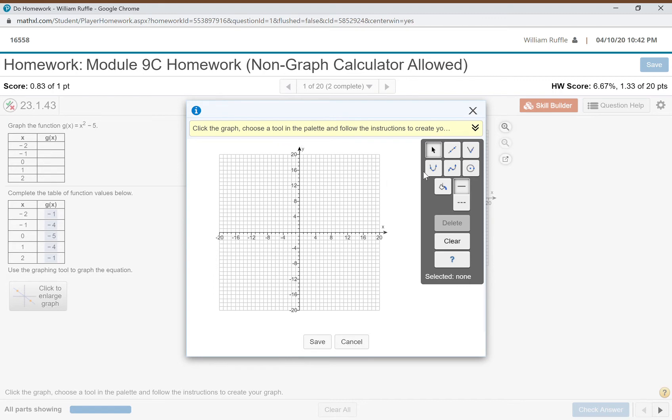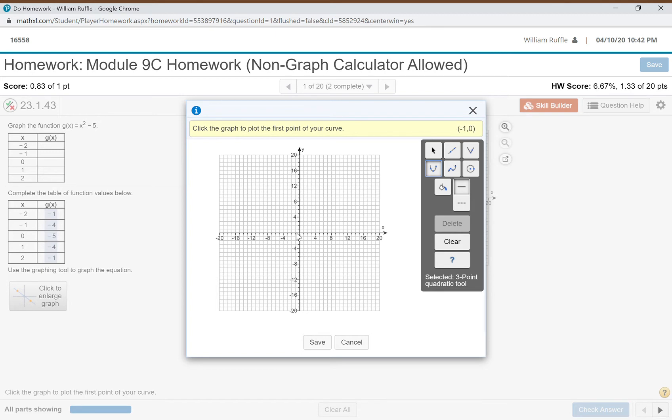When I move my mouse over the parabola, you can see it says three-point quadratic tool. That means I just need to plot three points and I can pick whichever three points I want to do. It doesn't matter what order. I'm going to click on this and do negative two.